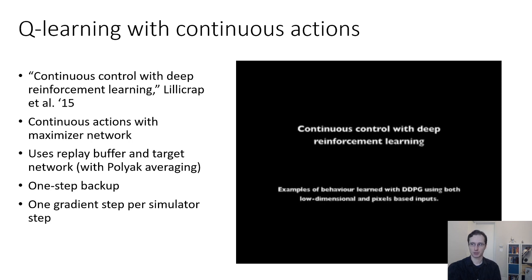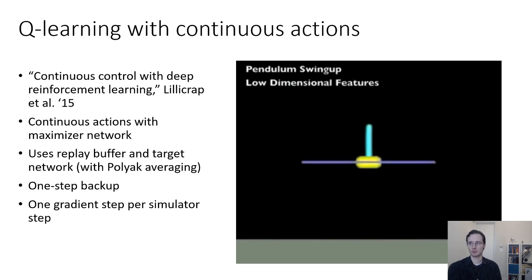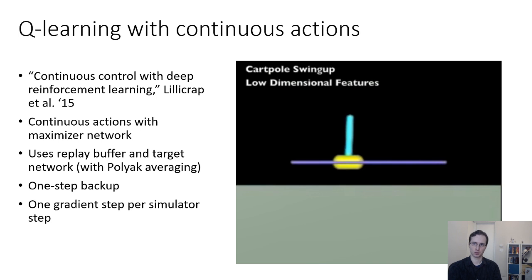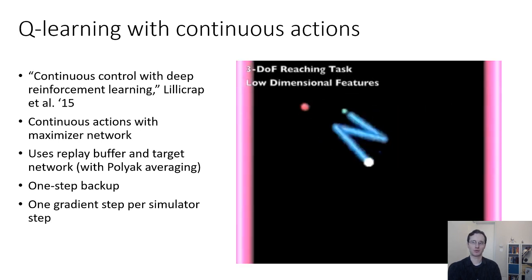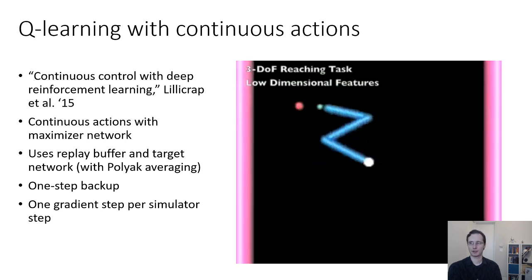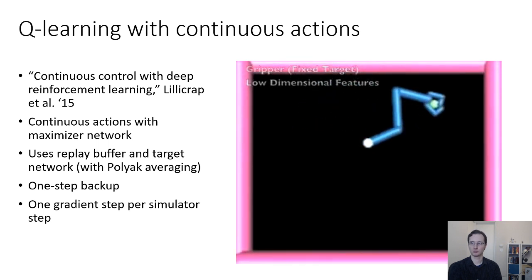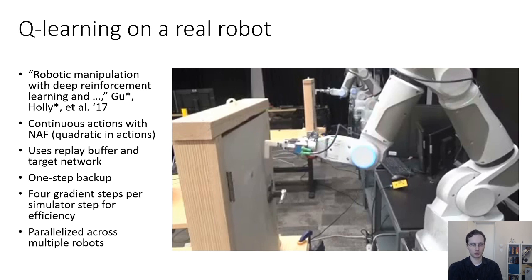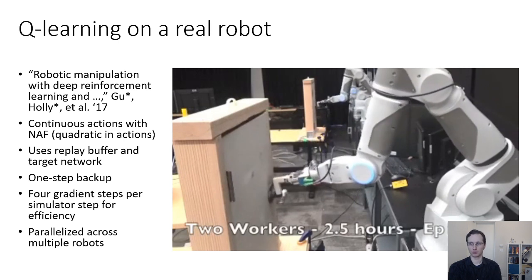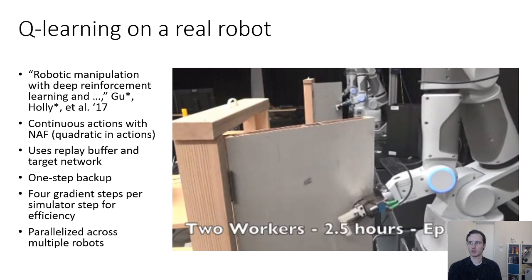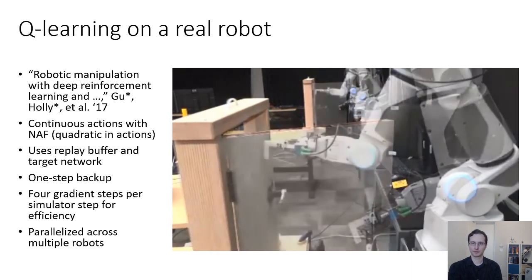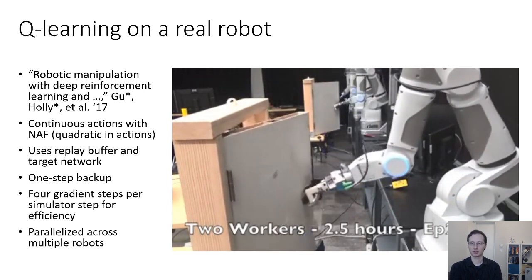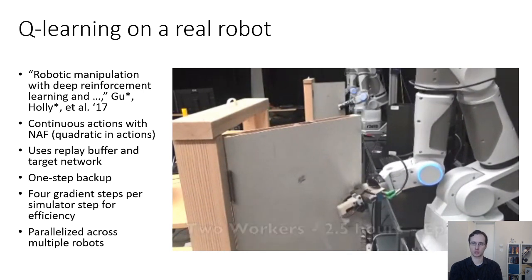The DDPG paper, 'Continuous Control with Deep Reinforcement Learning,' addresses Q-learning with continuous actions for simulated control. It uses continuous actions with a maximizer network, a replay buffer, target networks with polyak averaging, a one-step backup, and one gradient step per simulation step, evaluated on low-dimensional simulated robotics tasks. Another paper uses deep Q-learning with continuous actions for real-world robotic control using the NAF representation — a Q-function quadratic in the actions — making maximization easier, with four gradient steps per simulation step to improve data efficiency.